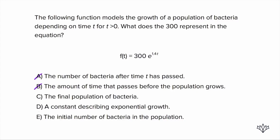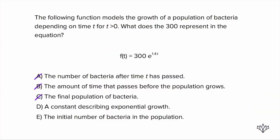Answer choice C, the final population of the bacteria. Well, are we at any point figuring out what the final time is? No. So this doesn't work. Answer choice D, a constant describing exponential growth. A constant is just a number. So that's fine. Describing exponential growth. Is that constant showing us how the growth is going to happen? No. That part is going to be given to us in the exponent.